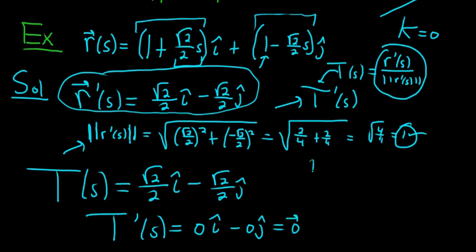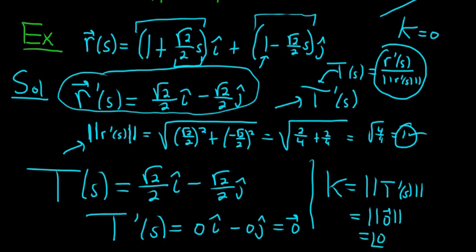And K is equal to the magnitude of that. It's equal to the magnitude of T prime of S. Well, it's just the magnitude of 0. It's the magnitude of the 0 vector, which is just the number 0. So the curvature of this line is 0. So I hope this video has been helpful. That's it.